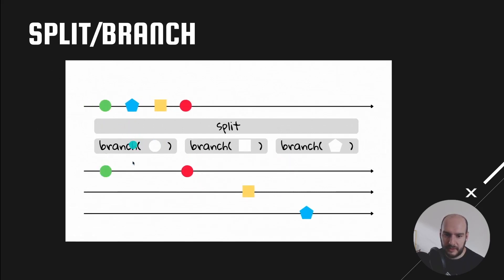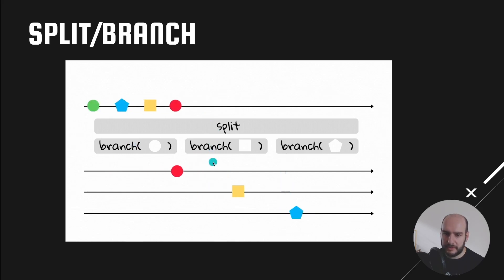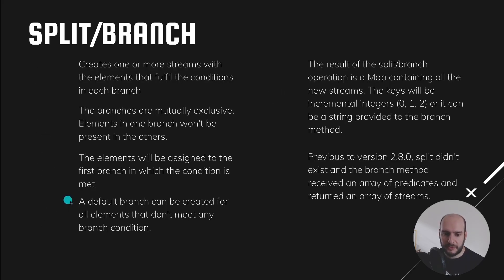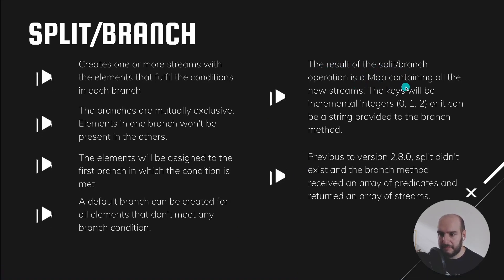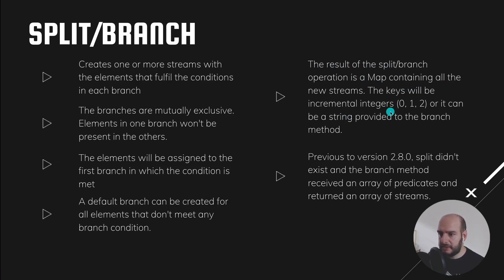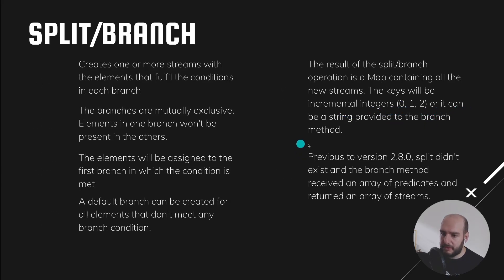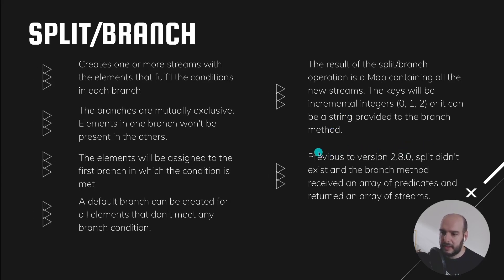For example, if a circle meets the first condition, it will be assigned to the first branch and never assigned to the second. You can also create a default branch to store all elements that don't meet any condition. The result of the split-branch operation is always a map containing all the new streams, and the keys for the map will be incremental integers or a string provided in the branch method.